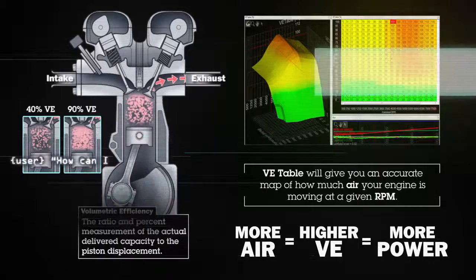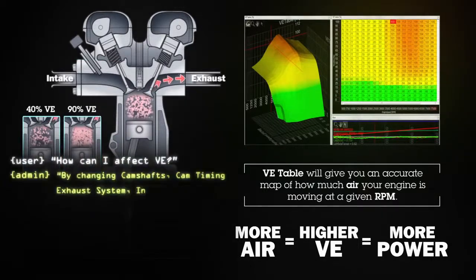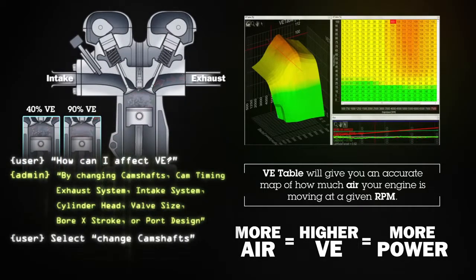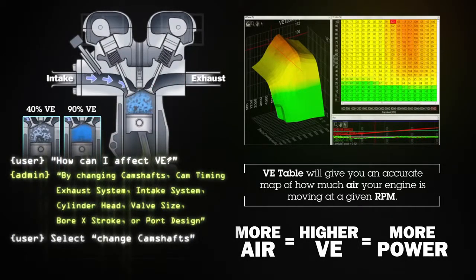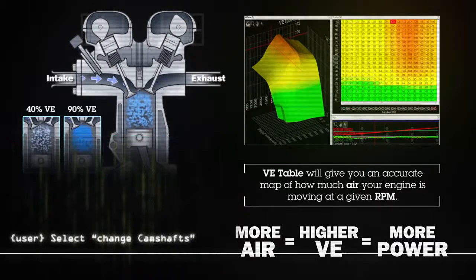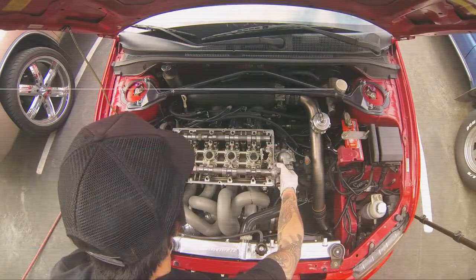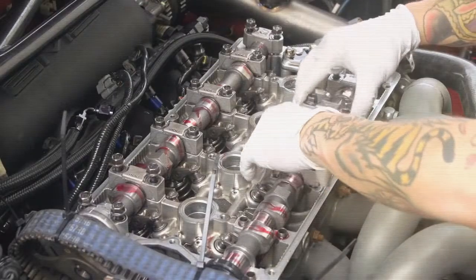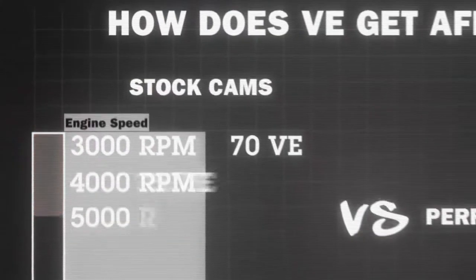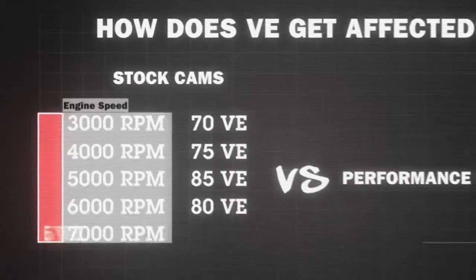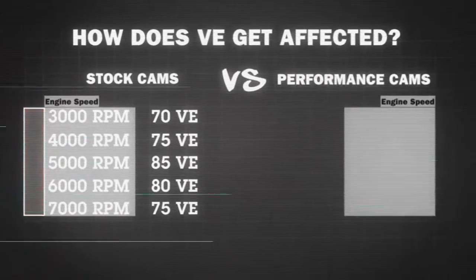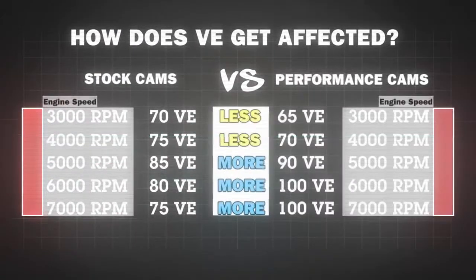You don't increase performance by throwing more fuel at it or less fuel at it. You increase the performance of an engine mostly by increasing how much air is moving through it. So if you've got an engine with upgraded camshafts, an engine with different cams is going to flow more air at certain RPMs than an engine with stock cams.